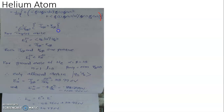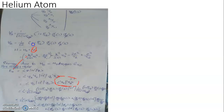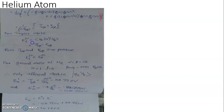The first term, the integral of phi_alpha*(1) phi_beta*(2) H' phi_alpha(1) phi_beta(2), we label as J_alpha_beta — the Coulomb or direct integral. The second term, the integral of phi_alpha*(1) phi_beta*(2) H' phi_beta(1) phi_alpha(2), we label as K_alpha_beta — the exchange integral. For the triplet state, with the anti-symmetric space part, the minus sign from the particle exchange gives the energy as J_alpha_beta minus K_alpha_beta.